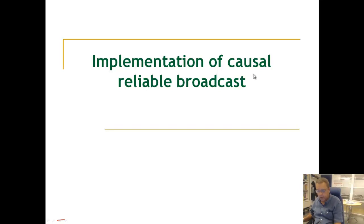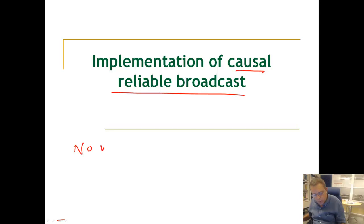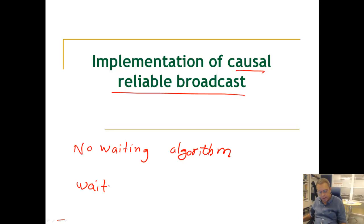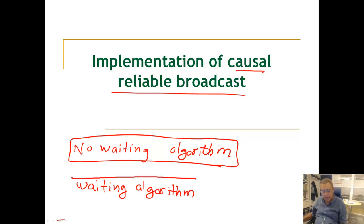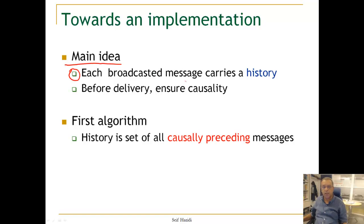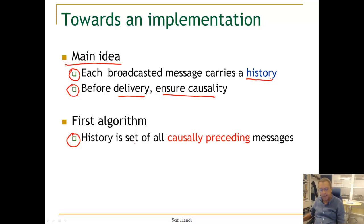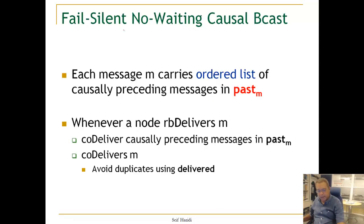We are going to look at the implementation of causal reliable broadcasts, and we will do this by looking at two algorithms. One will be called the no-waiting algorithm, and the other is a waiting algorithm. The no-waiting algorithm will not wait to ensure causal order delivery of a message, whereas the waiting algorithm, whenever a message is delivered by the underlying reliable broadcast, might wait for other messages to arrive before delivering that message.